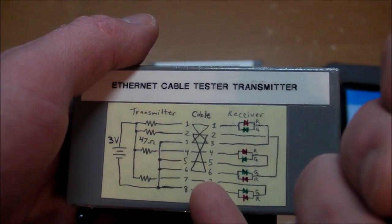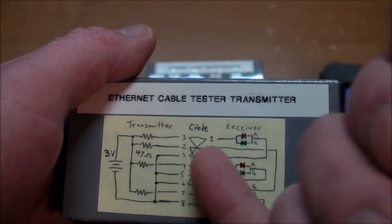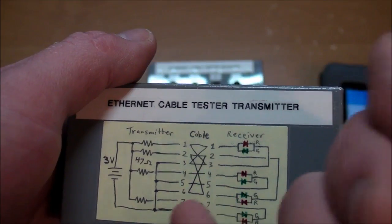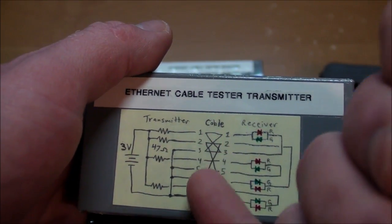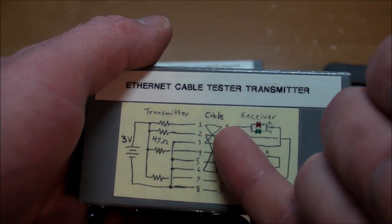So again, that's the straight-through. For crossover, it's 4 to 4, 5 to 5, 7 to 7, 8 to 8. And then 1 to 3, 3 to 1, 2 to 6, and 6 to 2.